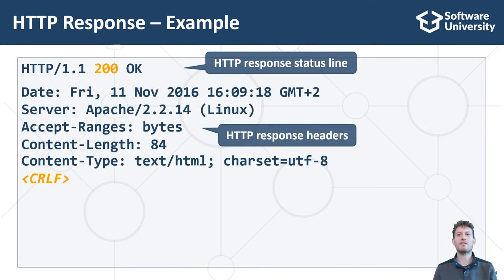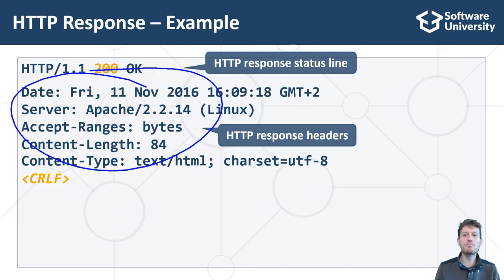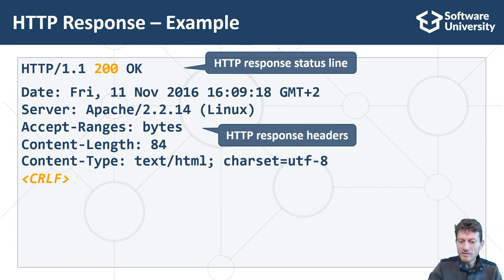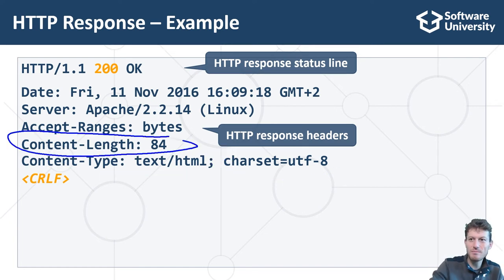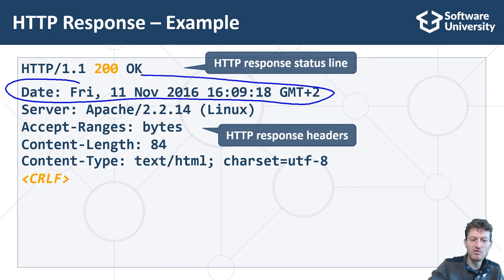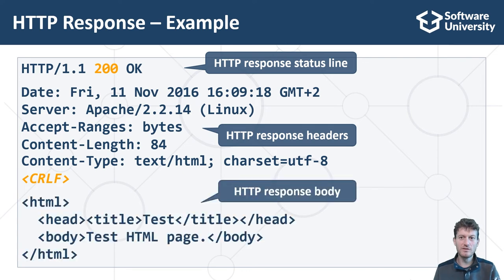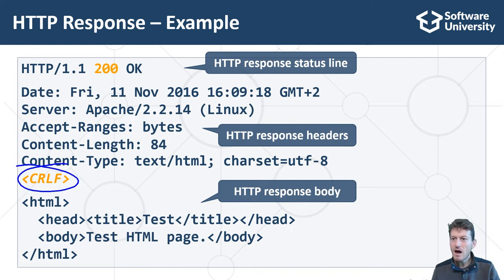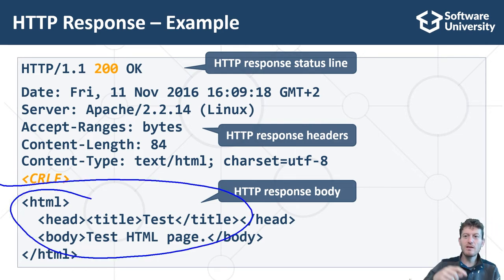After the HTTP status line, the HTTP response headers come. Response headers provide metadata about the returned resource or the returned error, such as content type, content encoding, content size in bytes, content last modification date, and many others. After the response headers and an empty separator line, the HTTP response body comes — this is the requested resource, the content returned by the server. It can be text or binary data, or can be empty. In our example, the web server returns an HTML page.